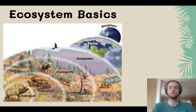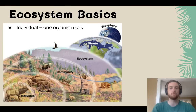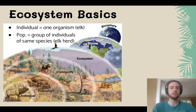Before we get into the ways that organisms interact with each other, we need to cover ecosystem basics. First we'll talk about an individual — an individual is just one single organism, and remember that an organism is a living thing, so in this case we have one individual elk. When we use the term population, we're referring to a group of organisms that are all of the same species, so in this diagram we have an elk herd.